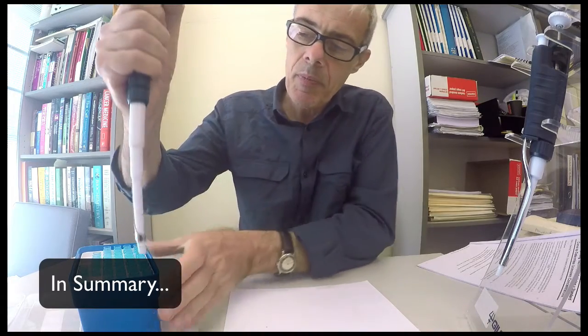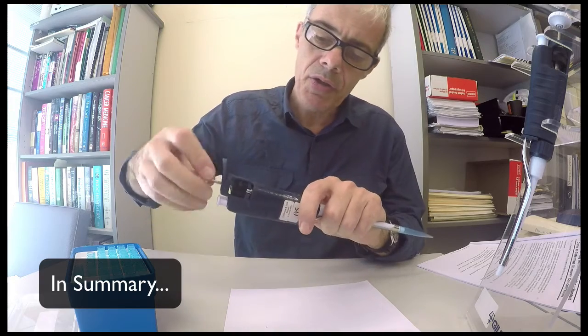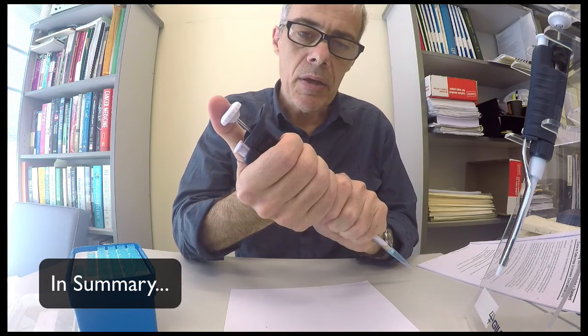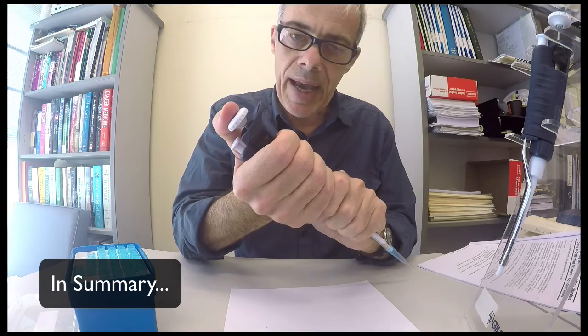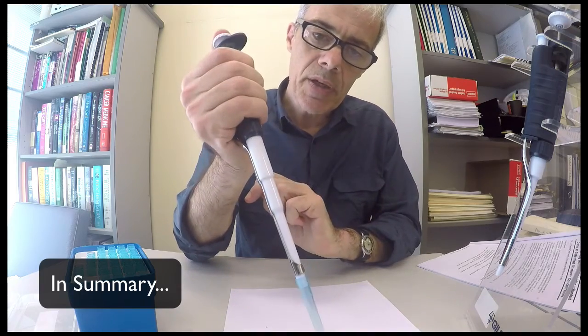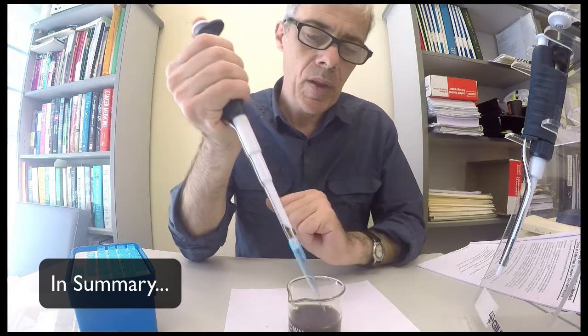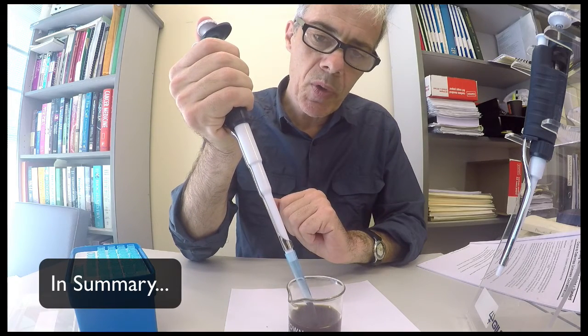When you're using any of these pipettes, you place a tip on, you set your dial to the volume, you then move the plunger down to the calibrated stop, you immerse into your solution.